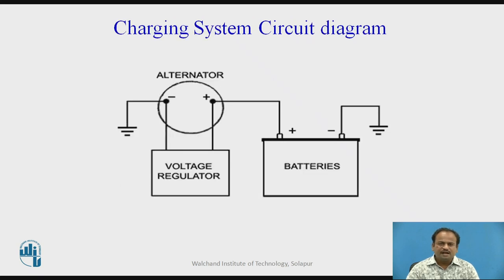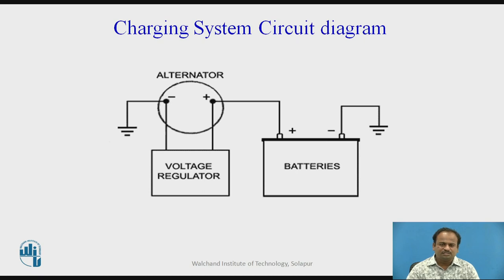We can see these three parts and how they are connected. The alternator is connected to the voltage regulator. The negative terminal of the battery is earthed to some parts. The positive terminal of the battery is connected to the alternator, and the positive terminal of the alternator is connected to the voltage regulator. The negative terminal of the battery is again grounded. Likewise, the charging system circuit of this particular automobile electrical system is designed.